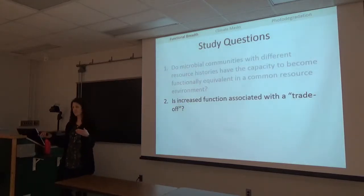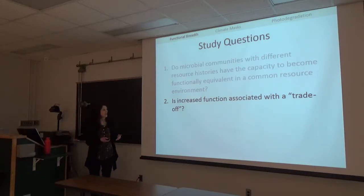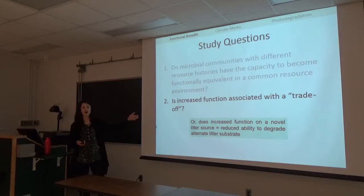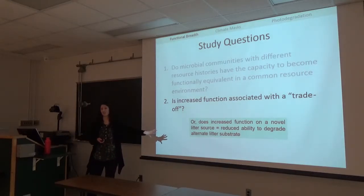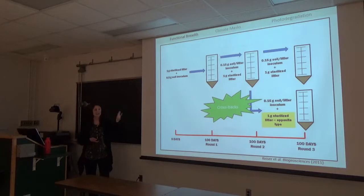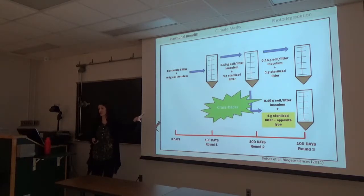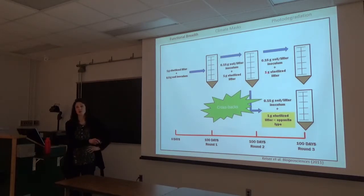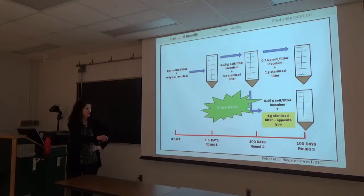They don't become equivalent—they also increase in function. But is this increase associated with a trade-off? Does increased function on a novel litter source equal a reduced ability to degrade an alternate substrate? After 200 days in the lab on the same litter source, that community was continued onto the same litter source, but also crossed onto the alternate substrate. So communities exposed to hardwood litter for 200 days were crossed onto grass litter, and vice versa.